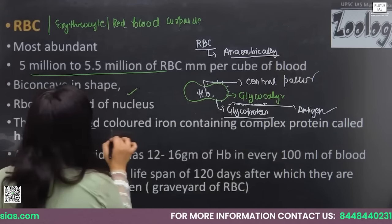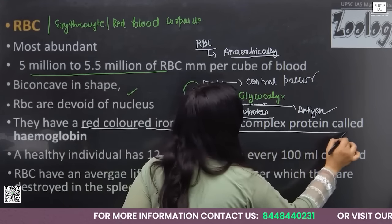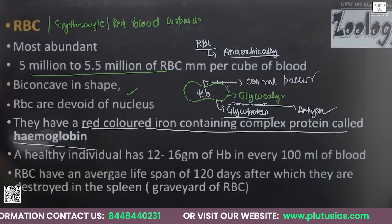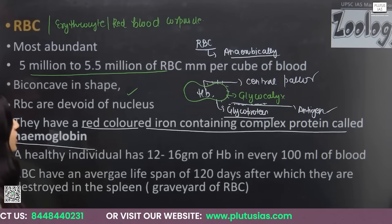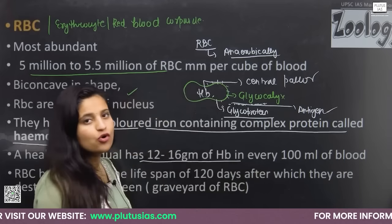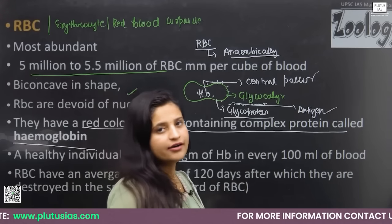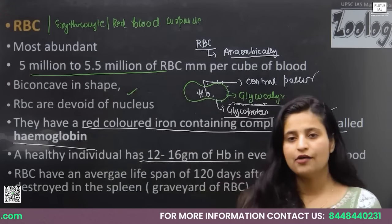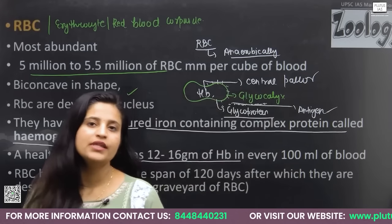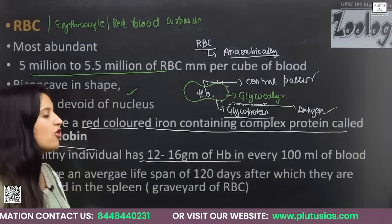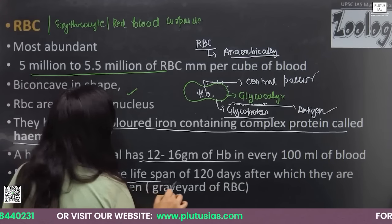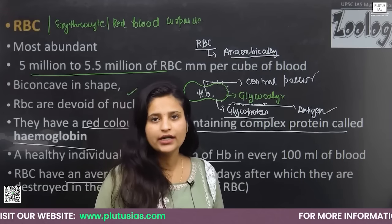RBCs contain a red-colored iron-containing complex protein known as hemoglobin. A healthy individual has 12 to 16 grams of hemoglobin in every 100 ml of blood. If somebody has less than this amount, they suffer from anemia — which means loss of hemoglobin.